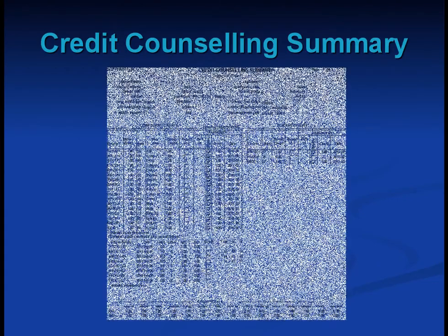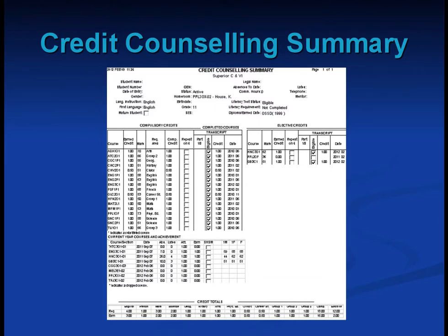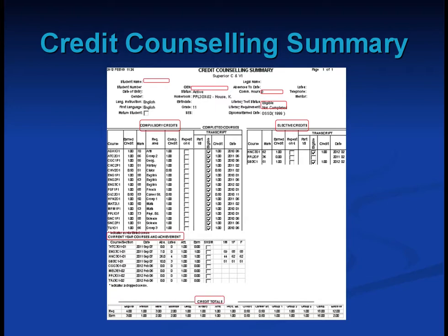Your credit counselling summary is found on the back of your course request planner. You will see your name, OEN, recorded community hours, and literacy test status at the top of the page. Then you will see your personalized list of completed compulsory and elective credits, your current year courses and achievements, and your credit totals. Remember, you need 18 compulsory and 12 elective credits to graduate.